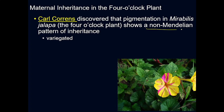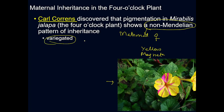Karl Correns first observed and used this non-Mendelian inheritance pattern in Mirabilis jalapa, the four o'clock plant. In this picture you can see a beautiful flower showing yellow and magenta coloring in the same flower — two different coloring patterns. This type of coloring pattern is called variegated, or variegation. It is not only present in flowers but often found in leaves as well.